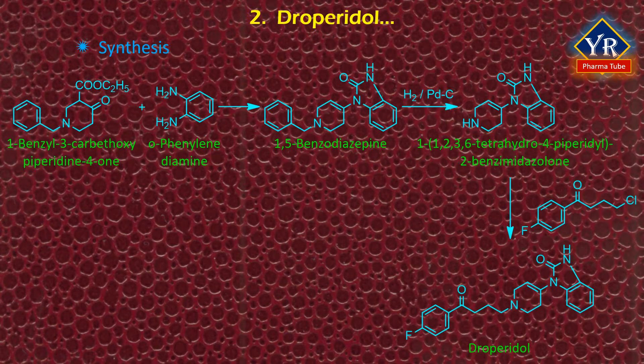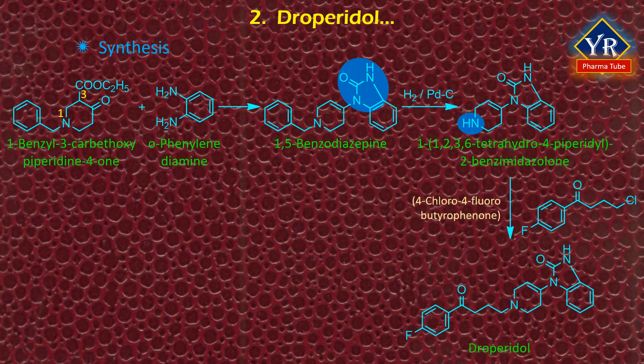Droperidol is synthesized from 1-benzyl-3-carbethoxy-piperidin-4-one, which is reacted with orthophenylenediamine to form a 1,5-benzodiazepine intermediate. This intermediate on reduction rearranges into 1-benzyl-1,2,3,6-tetrahydro-4-piperidyl-2-benzimidazolone. Debenzylation over a palladium catalyst gives 1,2,3,6-tetrahydro-4-piperidyl-2-benzimidazolone, and subsequent alkylation using 4-chloro-4-fluorobutyrophenone yields the desired product, droperidol.